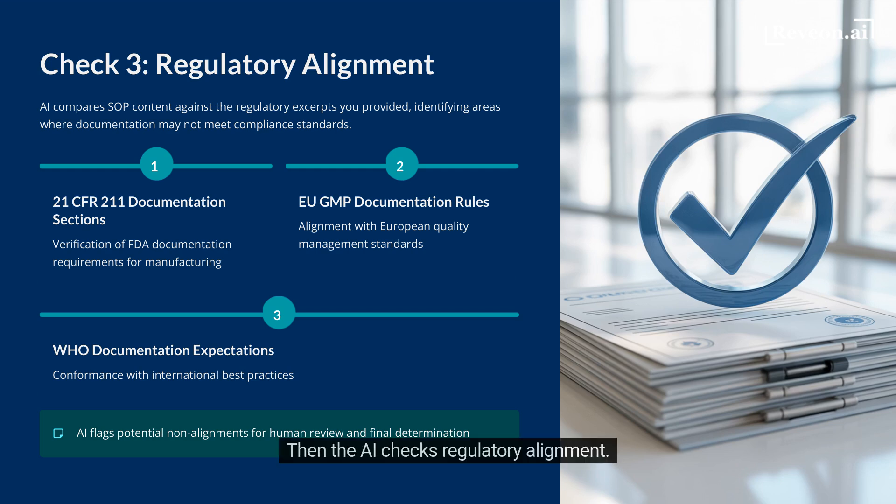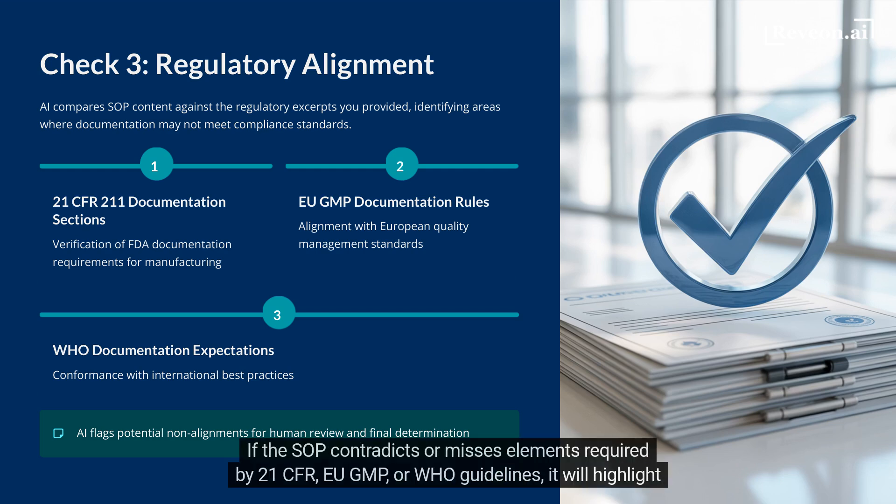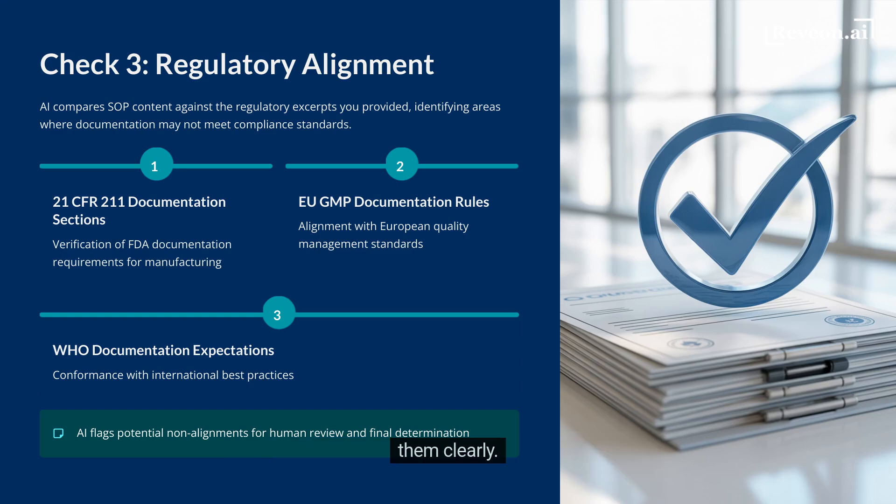Then the AI checks regulatory alignment. If the SOP contradicts or misses elements required by 21 CFR, EU GMP, or WHO guidelines, it will highlight them clearly.